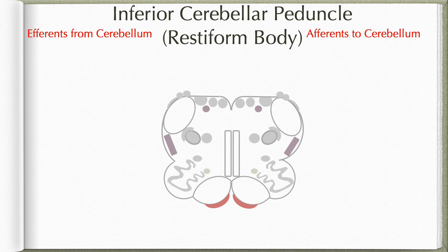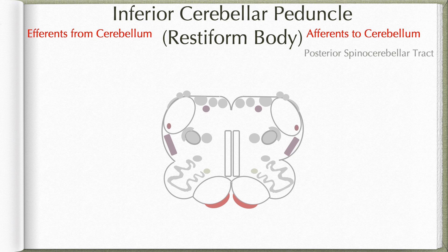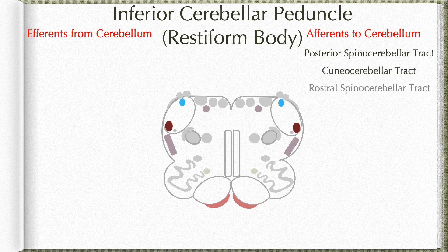Coming to this large fiber bundle known as the inferior cerebellar peduncle, otherwise known as the restiform body — this has a group of fiber tracts connecting the medulla oblongata to the cerebellum. It is predominantly made up of afferent fibers to the cerebellum, but it also has a few efferent fibers from the cerebellum. The afferents include: at this level the posterior spinocerebellar, the cuneocerebellar, and the rostral spinocerebellar tracts, which have joined the inferior cerebellar peduncle. All three of these carry non-conscious proprioceptive information from the body.